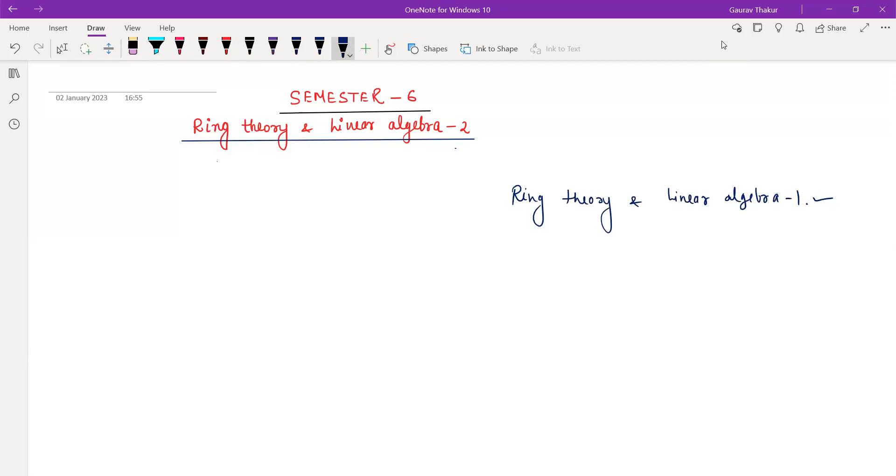Alright, so what does it mean? This means that the concepts we learned in Ring Theory and Linear Algebra 1, we are going to use in Ring Theory and Linear Algebra 2. Don't worry, I will discuss the basics here, but if you can recall on your own, that will be much better for you and for me also. It will be beneficial.